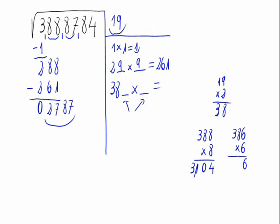So 386 times 6 gives us 2316. This one did not get over 2787, but let's try 7 to see if we get closer. So 387 times 7 gives us 2709, which is closer than 2316. So we will use 7.